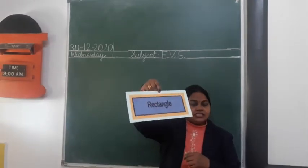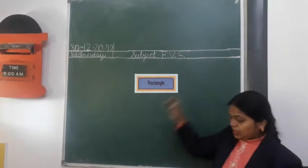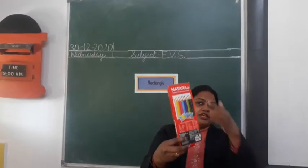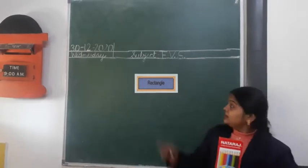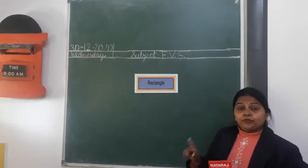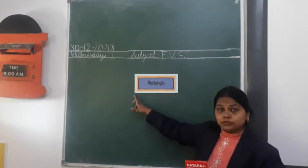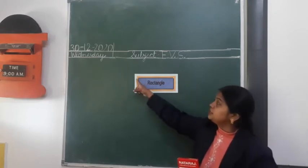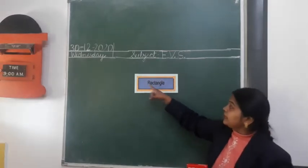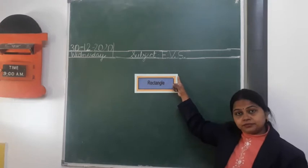Which shape? Rectangle shape. Can you see this? This is a rectangle shape. Now I want to show you this color pencil box — it is in rectangle shape. Rectangle has four sides and four corners. Two opposite sides are equal; these two sides are equal and these both sides are equal. Two sides are short and two sides are long. Rectangle. Okay?